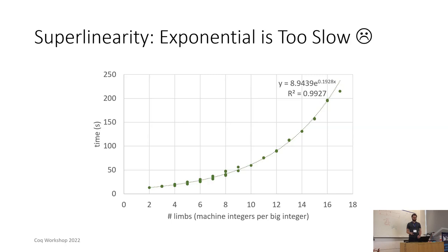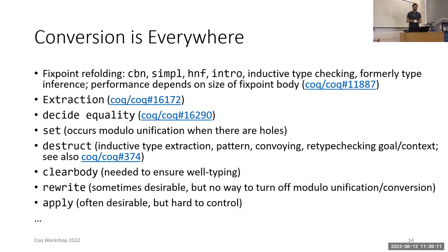Performance problems are pervasive and solving them is like playing whack-a-mole. Part of the issue is that conversion is one of the building blocks of the tactic engine and it is one of the building blocks that bottlenecks many tactics. It is everywhere. Fixed-point refolding is turning bare fixed points back into global constants. It uses something akin to conversion. It is the bottleneck behind the notorious slowness of simple and CBN. It also perhaps surprisingly shows up in HNF, intro, inductive type checking, and used to show up in all of type inference.